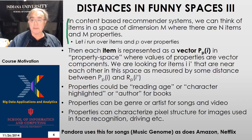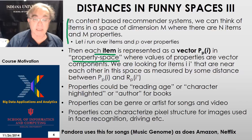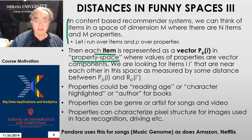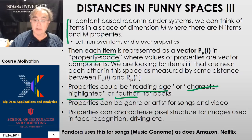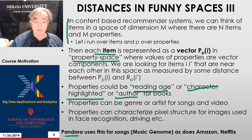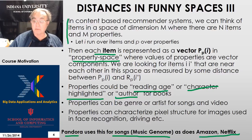The third type is content-based. Items are represented by vectors in the property space — maybe color, size, things like that. For books, it might be the reading age, whether it features Hercule Poirot, or even the author. Content-based recommender engines don't have quite the same features of having lots of non-valid entries. Pandora uses content-based recommenders — the so-called music genome. Content-based recommenders are also used by Amazon and Netflix.